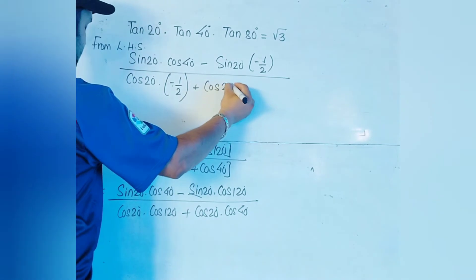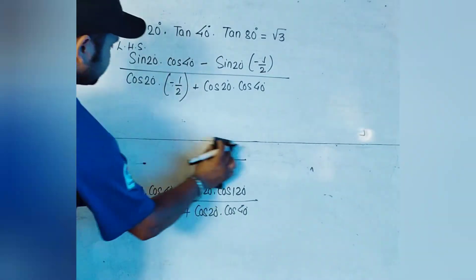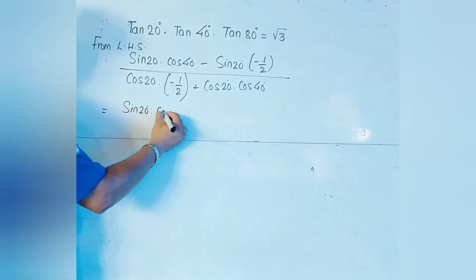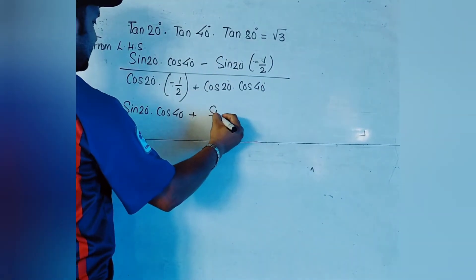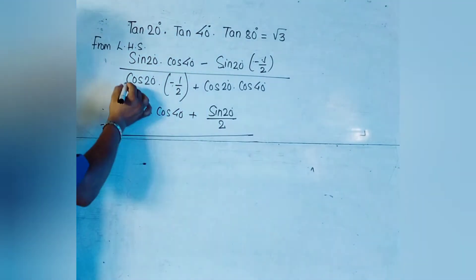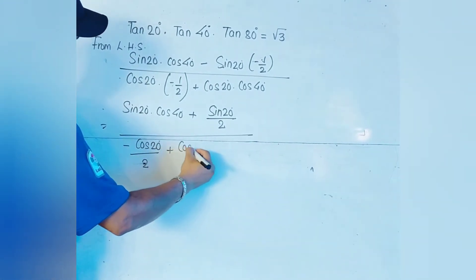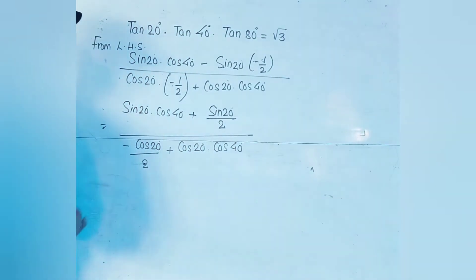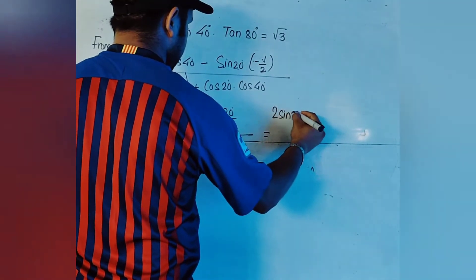Substituting cos120° = −1/2, the numerator becomes sin20° × cos40° − (−1/2) × sin20°, which simplifies to sin20° × cos40° plus sin20° over 2. We then take LCM: 2sin20° × cos40° + sin20°, all over 2.